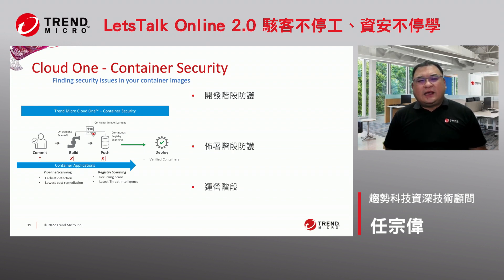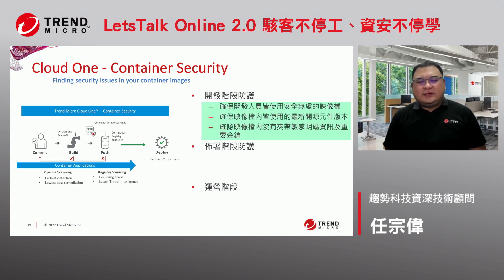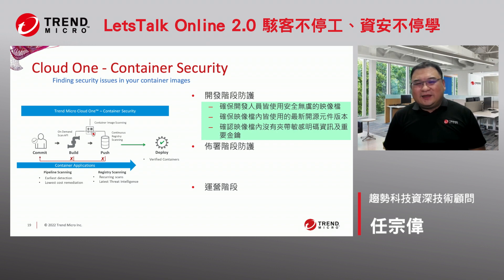接下来我们看还有哪一个产品跟DevOps有关。下一个产品就是刚刚有提到的container security，这东西现在跟DevOps的接接性越来越强。我们再看以container为标准的一个开发环境，到底会有哪些事来做。第一个就是在开发阶段，到底该做哪些事情？第一个就是我们应该要去确保这些开发人员在开发时候所应用的这些image档案，是不是都是安全的。